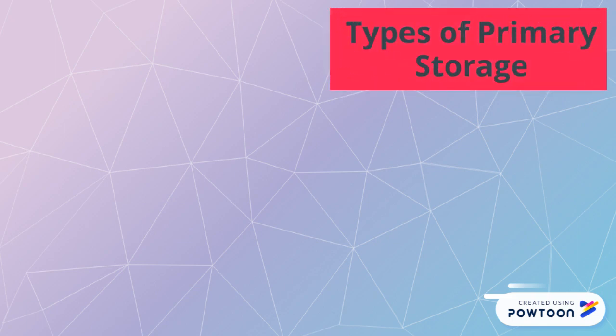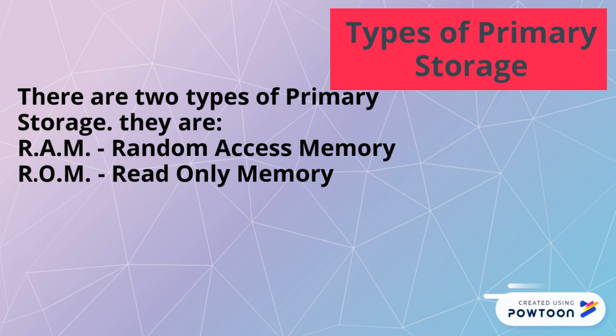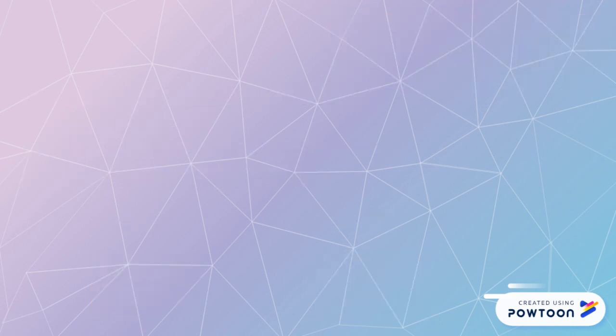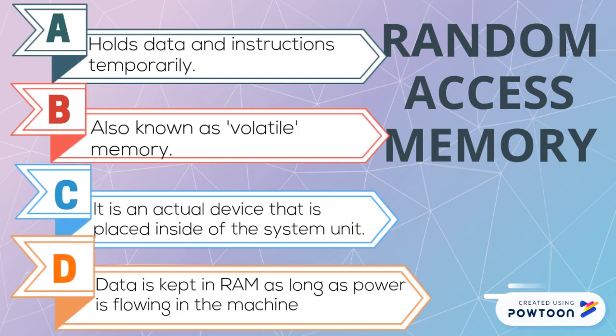There are two types of primary storage: we have RAM and we have ROM, and each of them basically works differently. RAM, which stands for Random Access Memory, is an actual device placed inside your system that is going to hold or keep your information temporarily. RAM will hold it only for a short period of time, or as long as your system has electricity running through it.